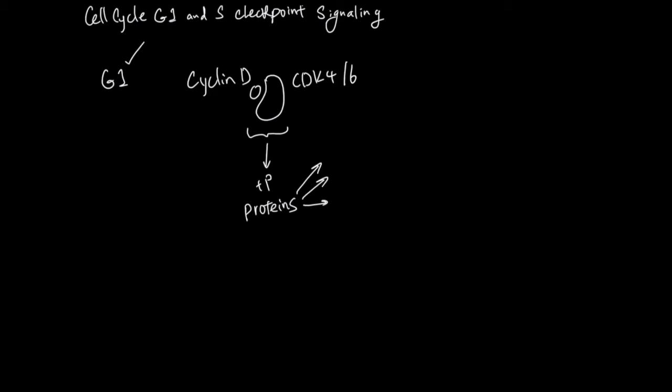And at the end of this G1 phase, if everything goes well, the protein that gets phosphorylated by the CDK4/6 together with the Cyclin D is RB, retinoblastoma protein. Let me tell you about what RB does in a little bit. Let me talk about the next few phases.